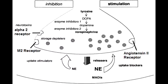What drug prevents the conversion of tyrosine into DOPA? The drug that prevents the conversion of tyrosine into DOPA is metyrosine. What drug inhibits the packaging of the catecholamines? The drug that inhibits the packaging of catecholamines is reserpine. What drugs inhibit the release of catecholamines into the synaptic cleft? The drugs that inhibit the release of catecholamines into the synaptic cleft include guanethidine and bretylium.